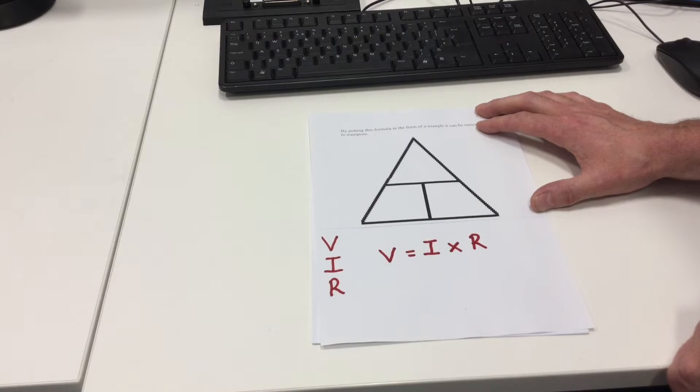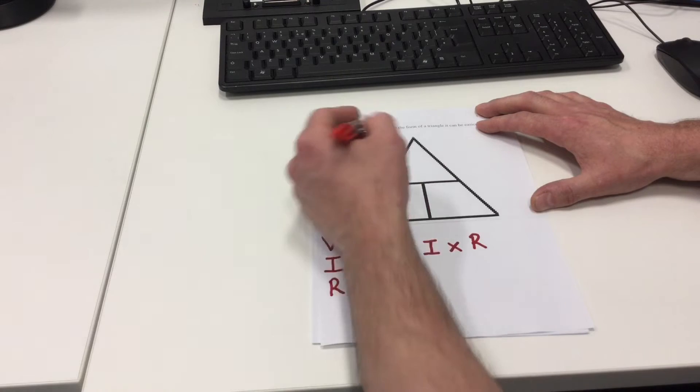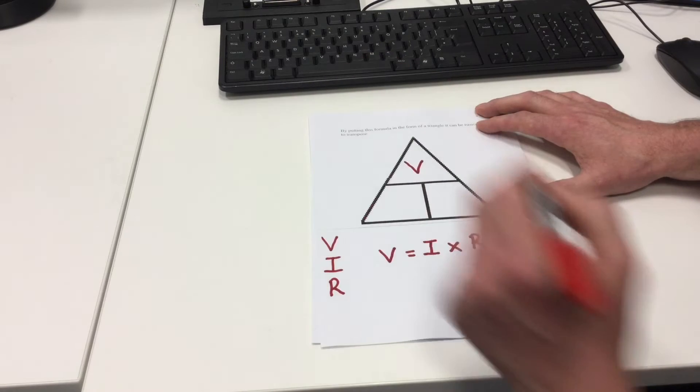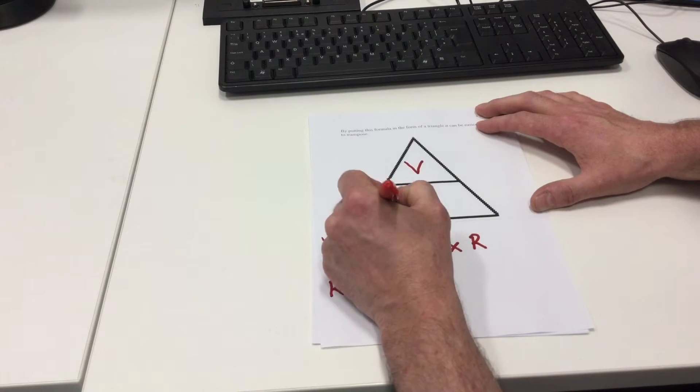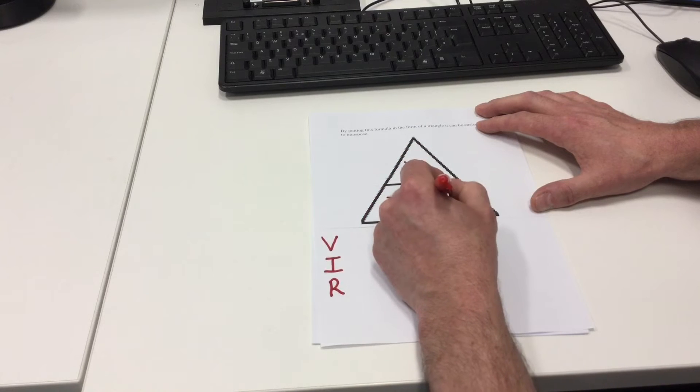We can place these letters into a triangle to make the formula easier to transpose, that would be V at the top for voltage, current and resistance below.